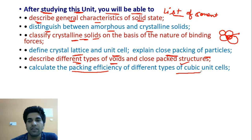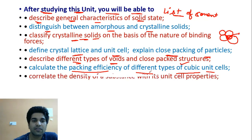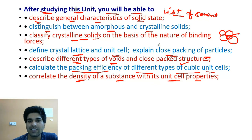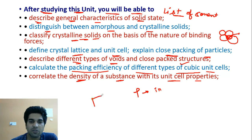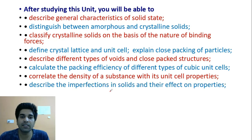The next topic is: calculate packing efficiency of different types of cubic unit cells. After that: correlate the density of a substance with the unit cell properties. As we know, density is an intensive property — we studied in eleventh class thermodynamics that density is independent of mass, so it is the same for the smallest part of matter as for a large amount.